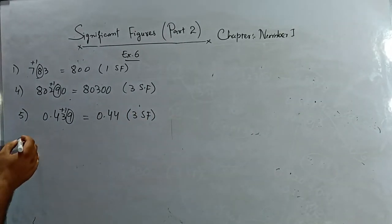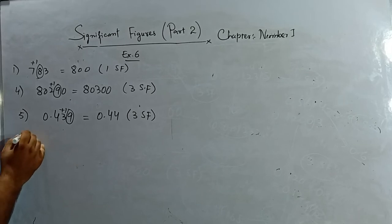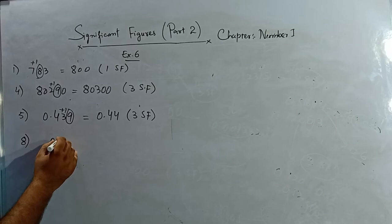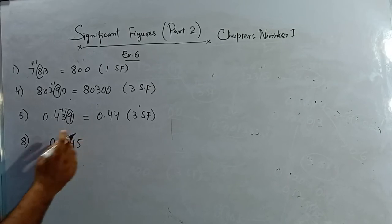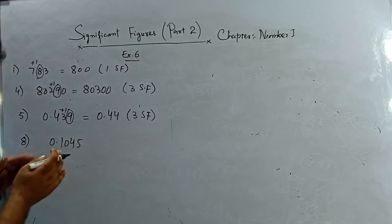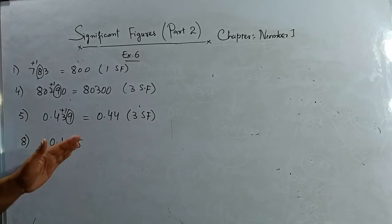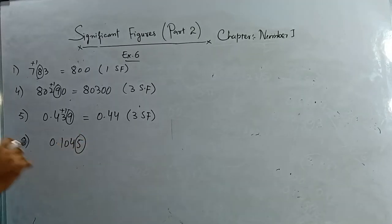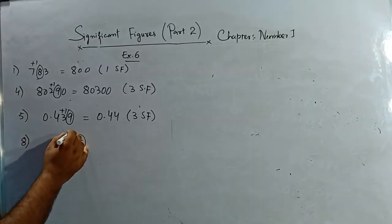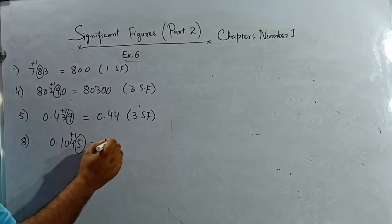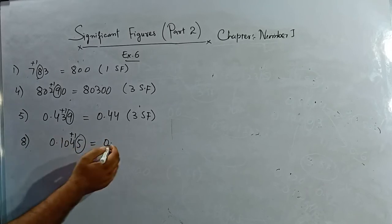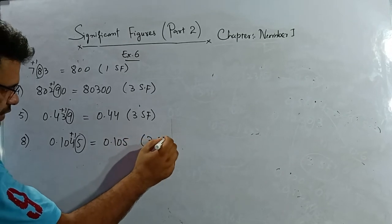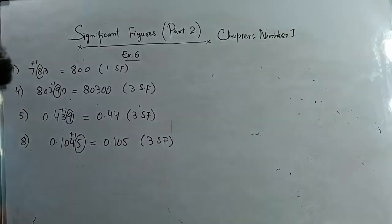Question number 8: 0.1455, write corrected to three significant figures. I check the fourth significant figure — it is equal to five, so I add one. The answer is 0.146, up to three SF.